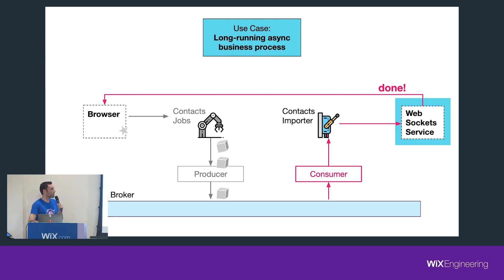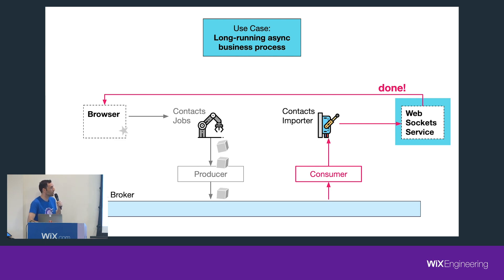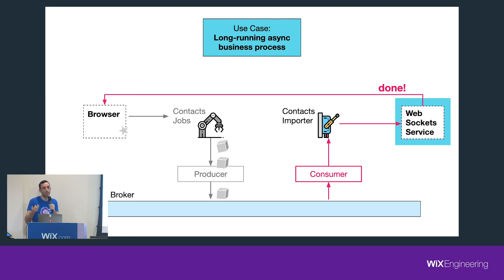So you can see here that the system is completely distributed and it can span multiple services. But using Kafka and WebSockets means it's completely event-driven and more resilient, because you have the intermediary in the middle — the Kafka broker — and also the WebSocket service has a lot of error handling by itself. You have this decoupling. I really like this way of architecture and I recommend it.